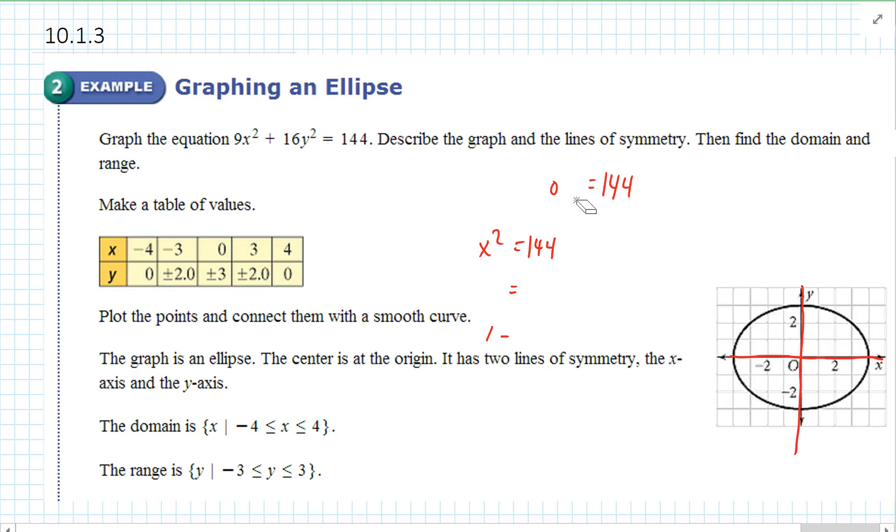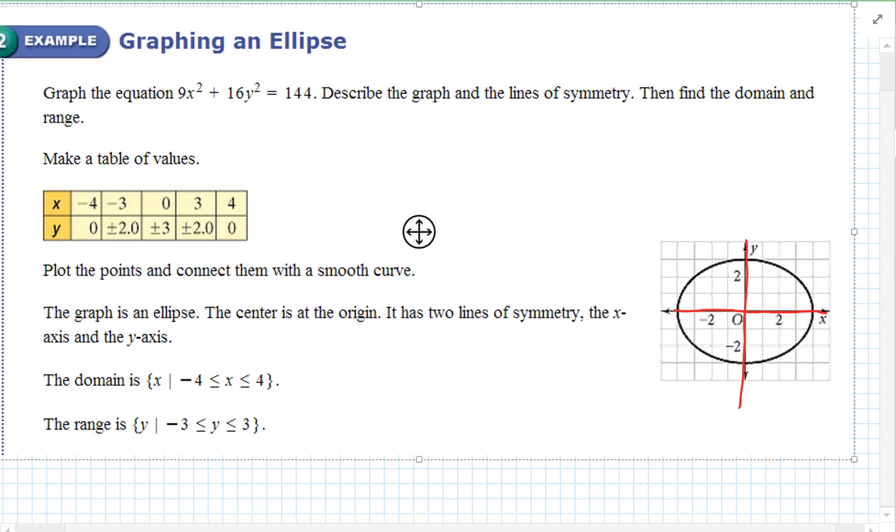Graph the equation 9x squared plus 16y squared equals 144. Describe the graph and the lines of symmetry. Then find the domain and range. So make y zero, solve for x. x would be negative four. Make x negative three, solve for y. Make x zero, solve for y. So on and so forth.